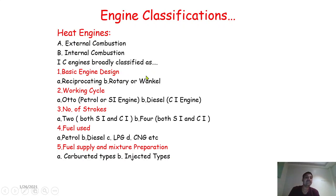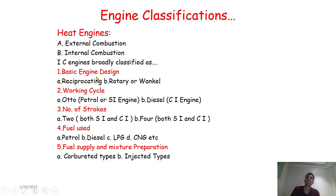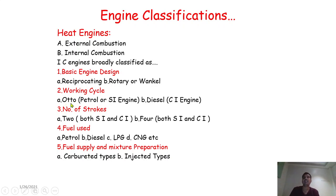IC engines are broadly classified on different bases. First, according to engine design, IC engines are sub-classified as: (a) reciprocating engine and (b) rotary or Wankel engine. Second, according to the working cycle, they are classified as: Otto cycle — also called the petrol cycle, used in SI engines — and Diesel cycle, used in CI engines.